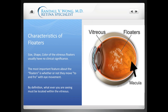By definition, they should be moving back and forth, to and fro, up and down, when you move your eye. So by definition, if that's true, whatever you're seeing has to be located in the vitreous. And that's very important for me to confirm, because if we're going to talk about removing the vitreous, whatever you're seeing better be in the vitreous, because that's what we're going to remove.